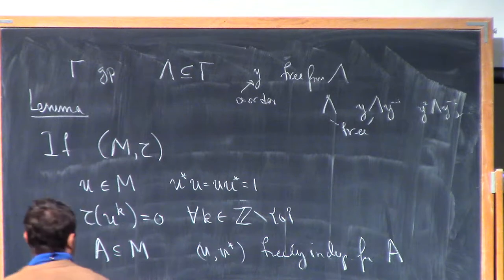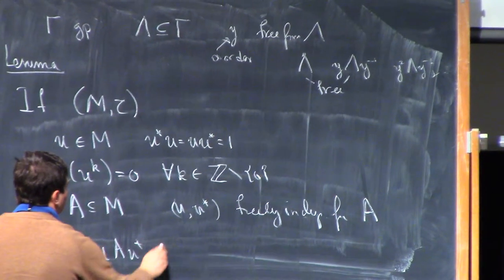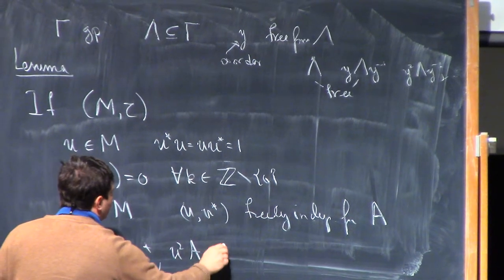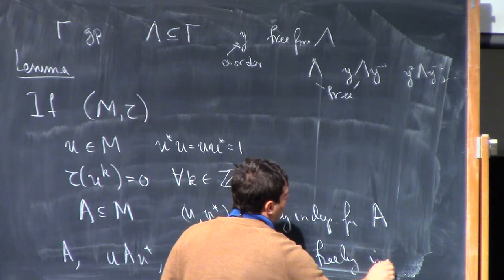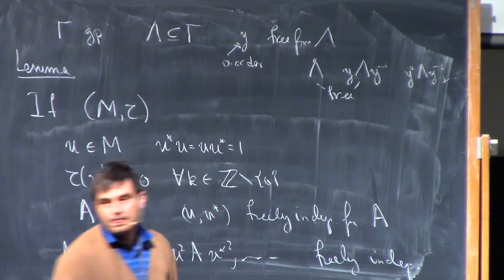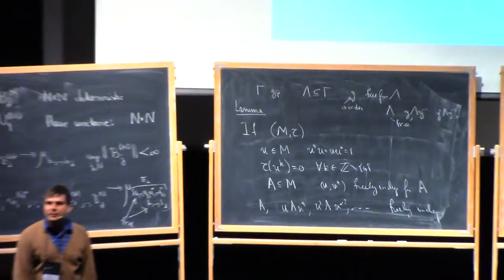And then let's say that I have some kind of a sub-algebra a inside M, and that u, u star is freely independent from a. Well, from that you can quickly discover that a, u a u star, u squared a u star squared, all of these guys are freely independent. And the proof is not very hard. You just write down the freeness condition and it's almost immediate.